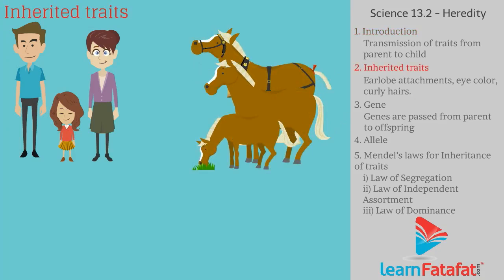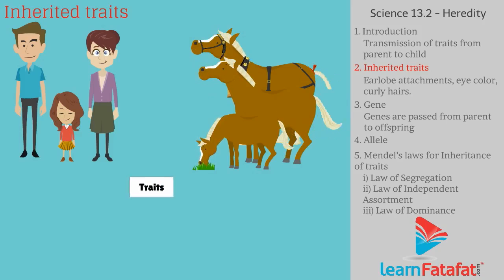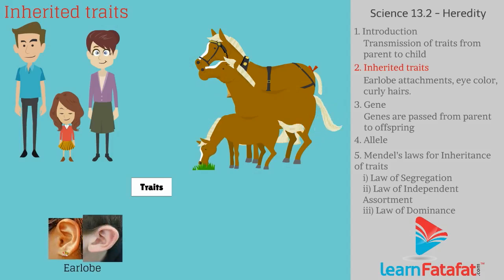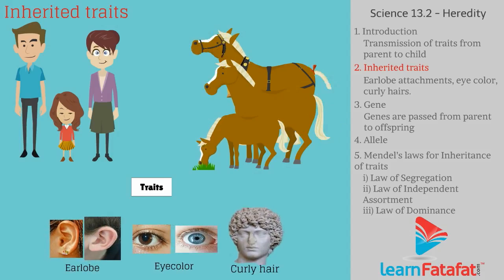Inherited traits: The child looks similar to his parents because the child inherits their traits such as earlobe attachments, eye color, and curly hair.